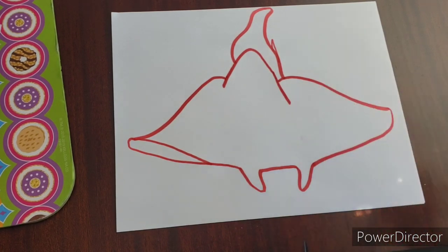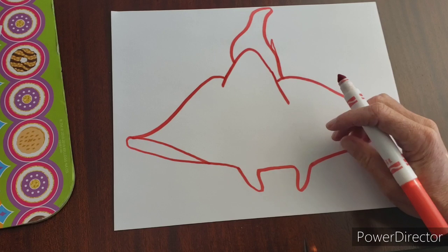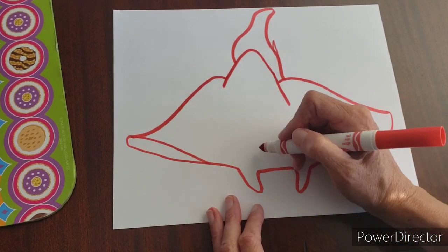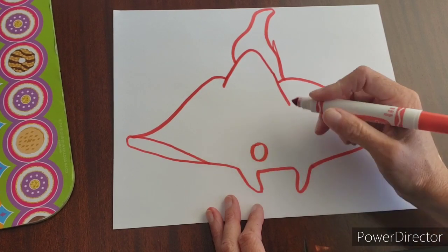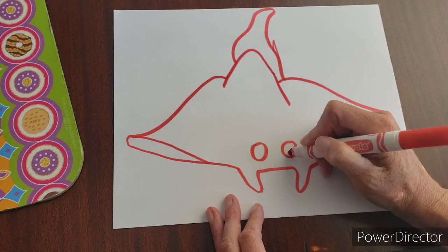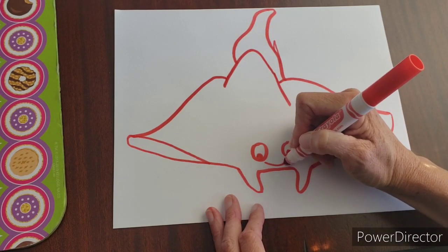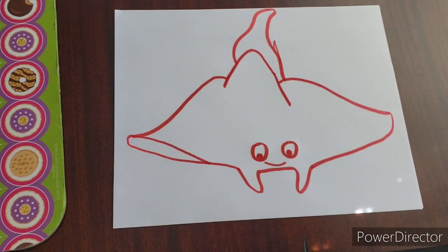And now we're just going to give it a little face. Right here by the two parts of his body sticking out by his mouth, we're going to give it eyeballs. Our stingray is happy, so you can give your stingray a little happy face too.